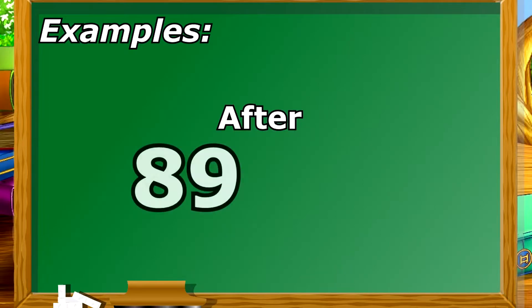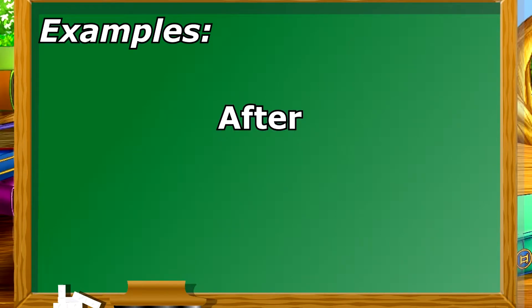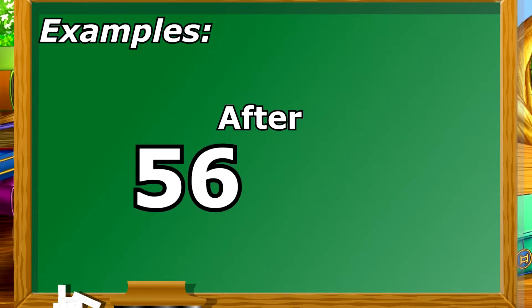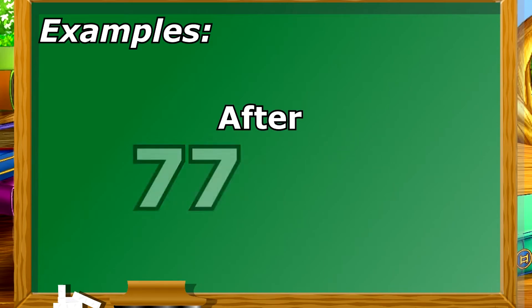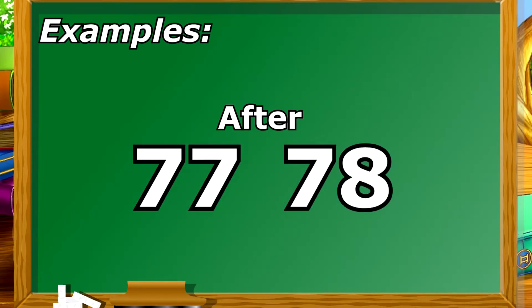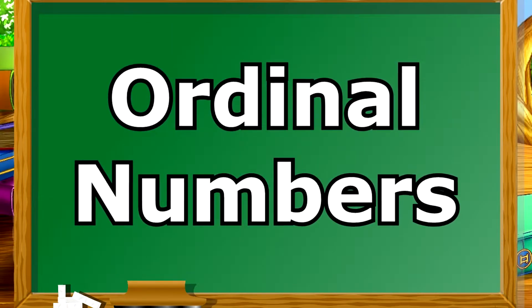After 89 is 90. After 56 is 57. After 77 is 78. Ordinal numbers.